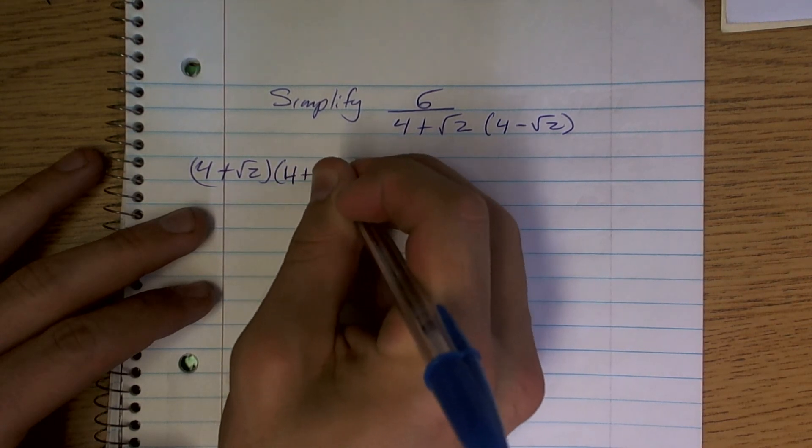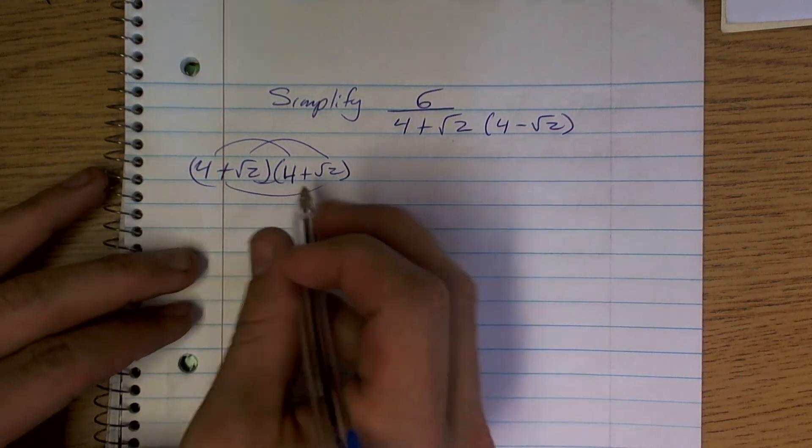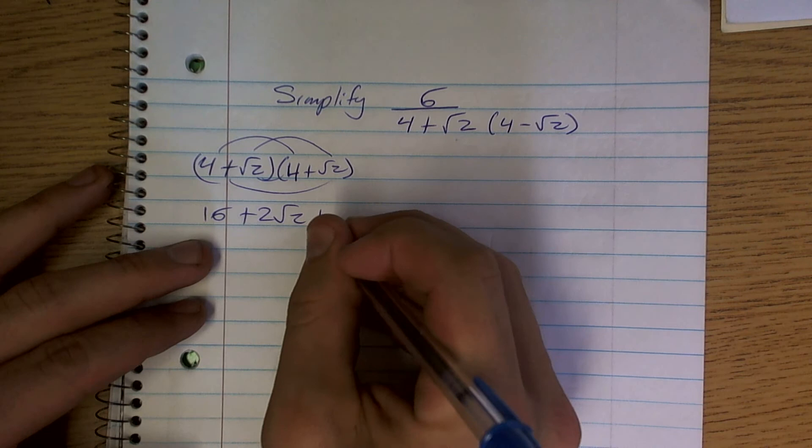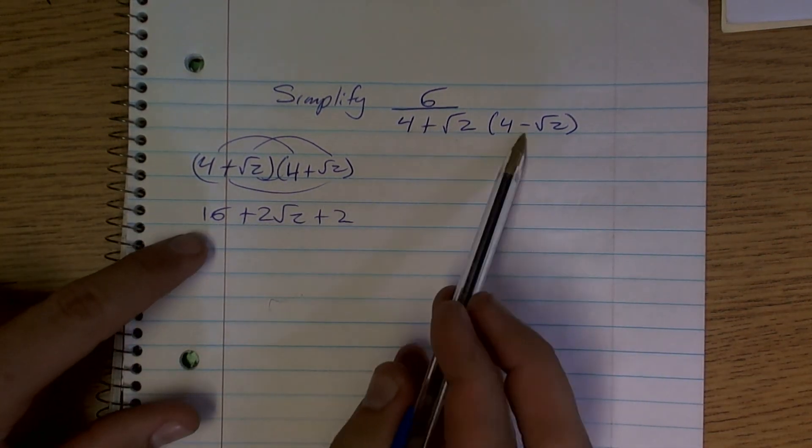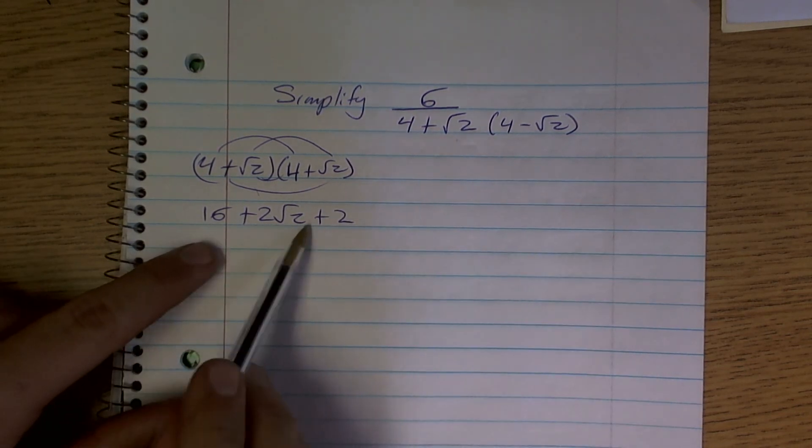And if I was going to use my FOIL, what I would get is 16 plus 2 radical 2 plus 2. So even though I'm multiplying by 4 plus radical 2 times 4 plus radical 2, you're still going to have a radical on the bottom. Does that make sense?